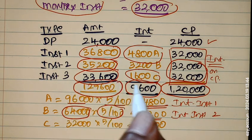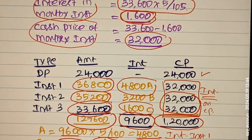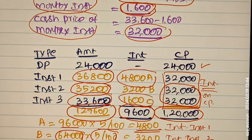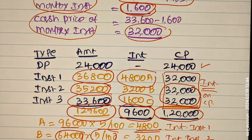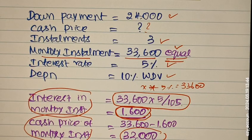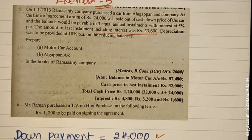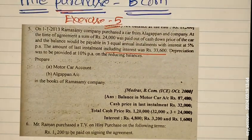So with this working note, you can now prepare the remaining accounts. We have the Cash Price of the asset and the interest amounts. If you have any doubt, refer to the question. Thank you.